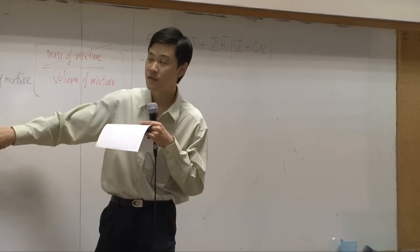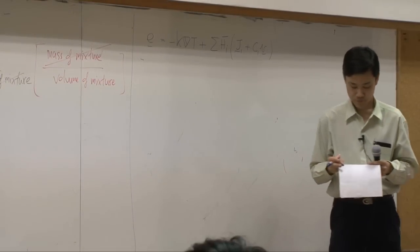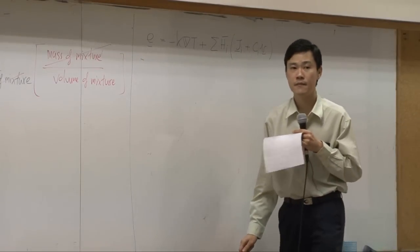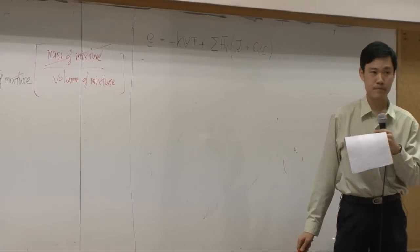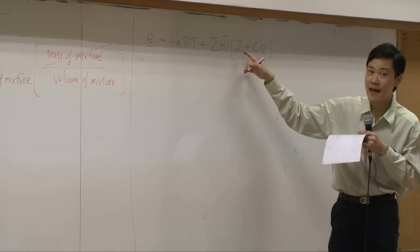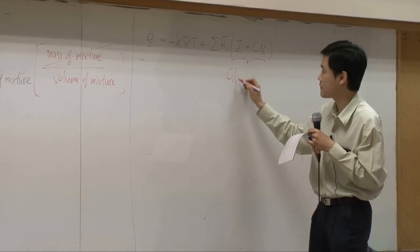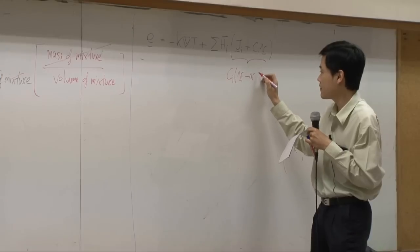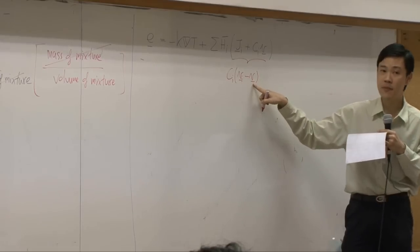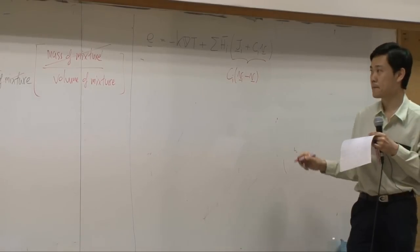This term still needs to be multiplied by V. Now regarding this term, by definition, capital Ji is equal to Ci Vi minus V — the velocity of species i relative to the mixture velocity. This mixture velocity is the mass average.